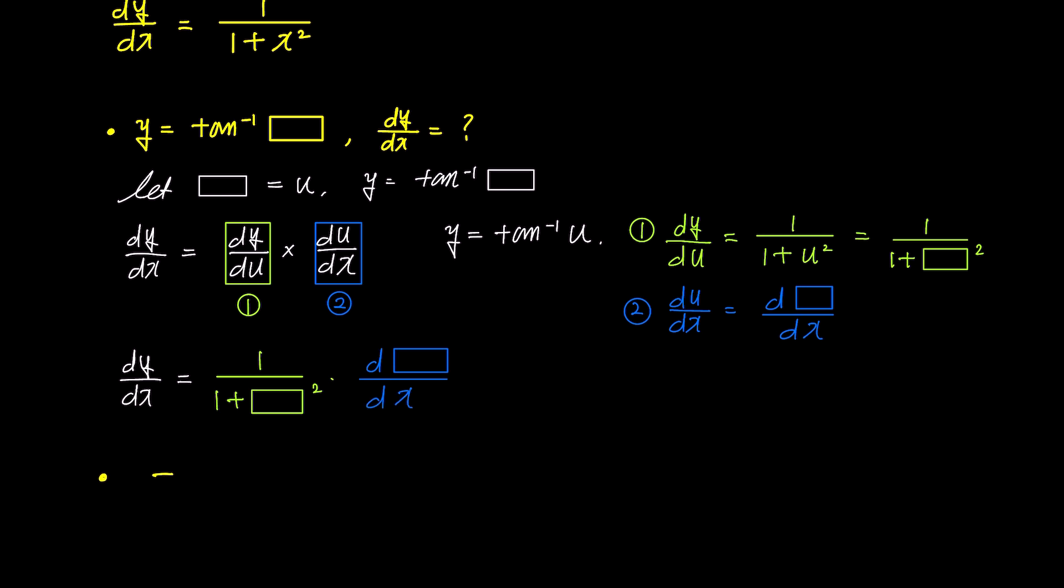Simplifying further, the derivative of the arctangent box is box prime over 1 plus box squared. In essence, when finding the derivative of the arctangent box, examine the contents inside the box, place the derivatives of the terms inside the box in the numerator, and position 1 plus box squared in the denominator.